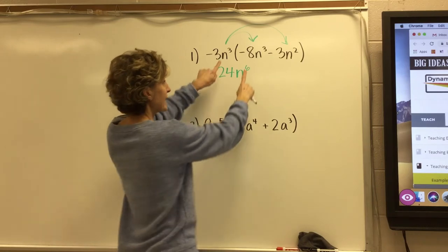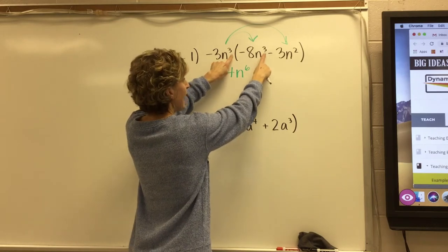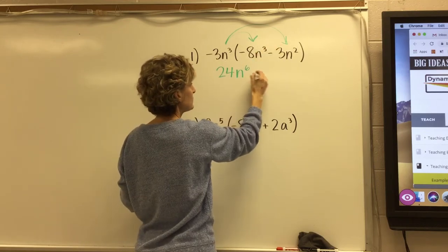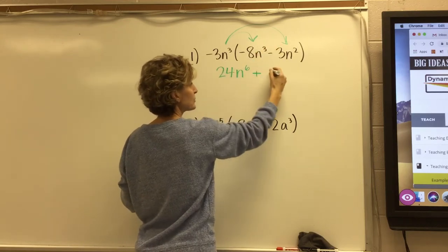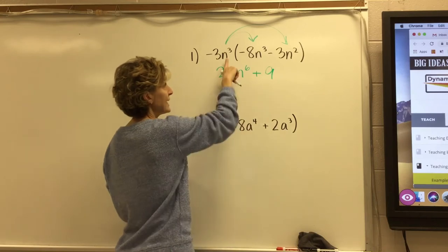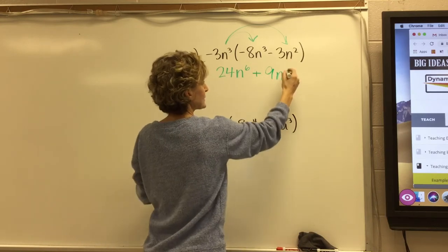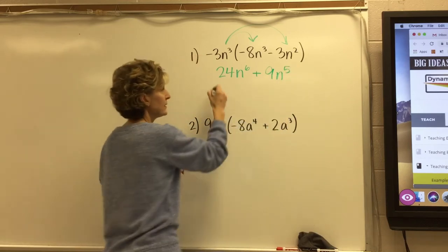When you multiply that same base, you add the exponents. And then I take it again into the second term, and I get plus 3 times 3 is 9, and n to the third times n squared is n to the fifth. That's your answer.